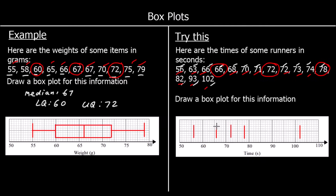We draw a box around the quartiles, which represents 50% of the data — half of the runners. Then we draw lines out to the smallest, the quickest, and the slowest runner.